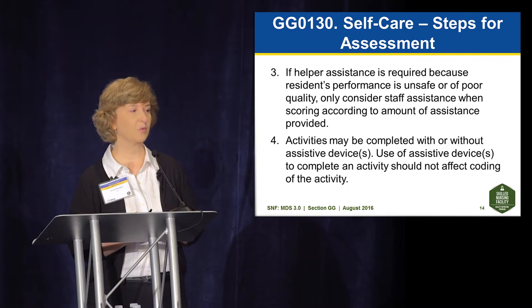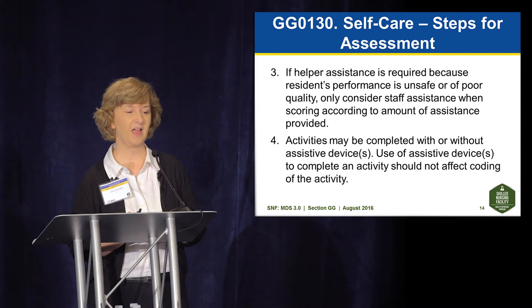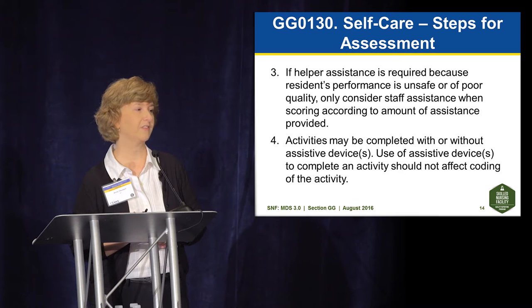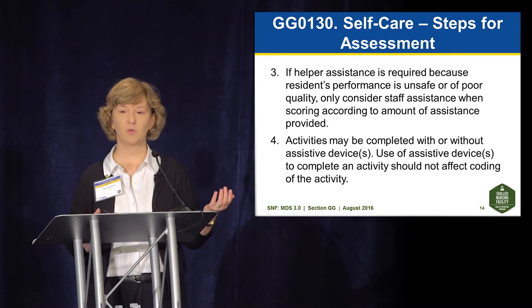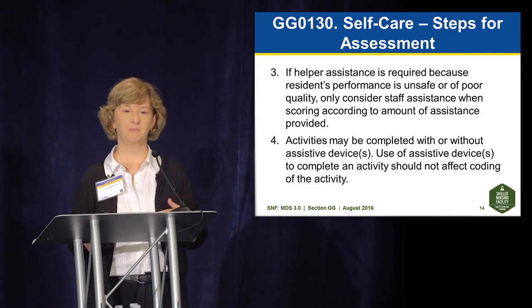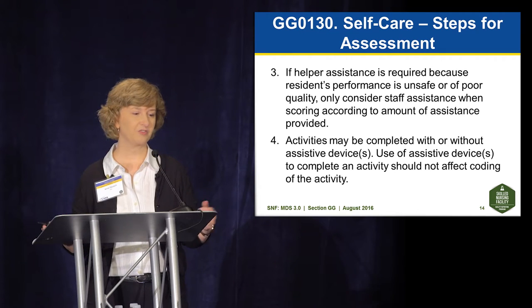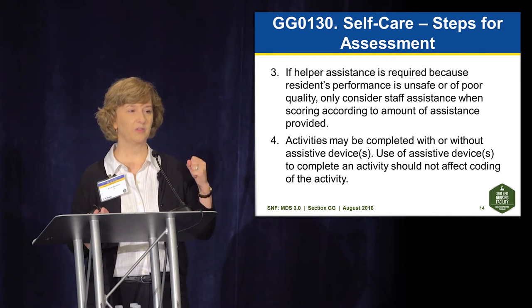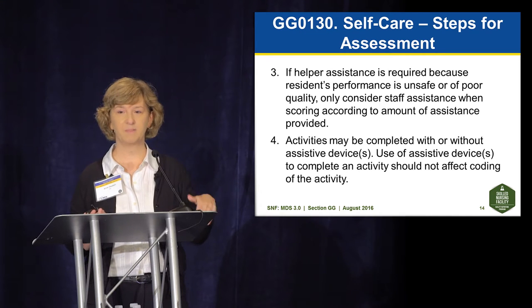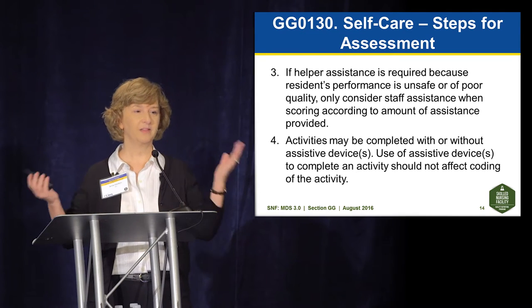Residents should be allowed to perform activities as independently as possible, as long as they're safe. If someone is in a hurry to get to therapy and a lot of hands-on assistance is provided without the person having the opportunity to be as independent as possible, that's not an assessment. It's important to make sure the person is allowed to be as independent as possible to accurately score the items. Also, if helper assistance is required because performance is unsafe or poor quality, only consider staff assistance when scoring. Activities may be completed with or without assistive devices — the fact that somebody uses a device does not change their score; you're always thinking about how much human assistance is provided.